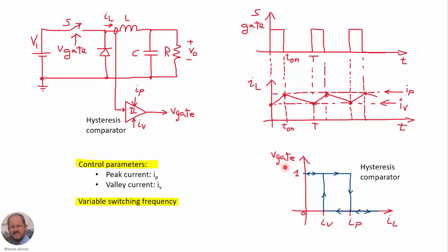This is the response that we need for our comparator — the gate voltage, the output of the comparator as a function of the current through the inductor. We have the valley current and the peak current. If the current is below the valley value, the gate is going to be activated. When the switch is activated, we compare the current with the peak value, so the current increases. When the current reaches the maximum value IP, the gate goes to zero, so the switch is turned off. The current decreases until reaching IV, then the switch is turned on again.